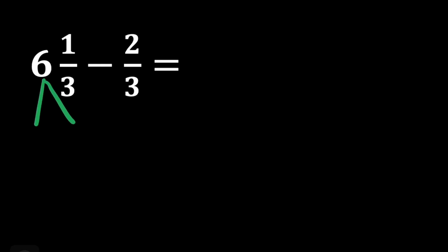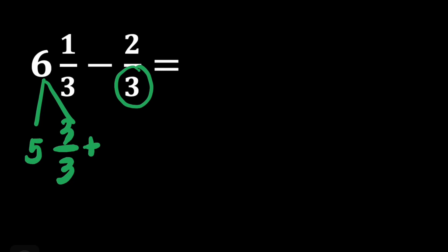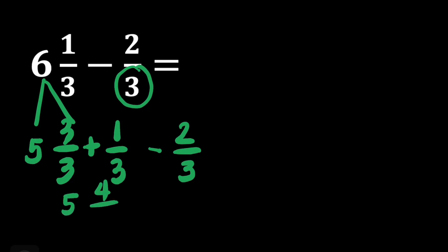We have another question: 6 and 1 third minus 2 thirds. Since we cannot subtract 2 thirds from 1 third, we can follow the trick that we did in the previous question. We will rename 6 and 1 third to its equivalent mixed fraction. First, we will rename 6 — we'll subtract 1, and that's going to be 5. Then we'll copy the denominator of our subtraction, it's going to be 3 thirds. And then we have to write 1 third because this is still part of our minuend. It means we rename 6 and 1 third into 5 and 4 thirds.